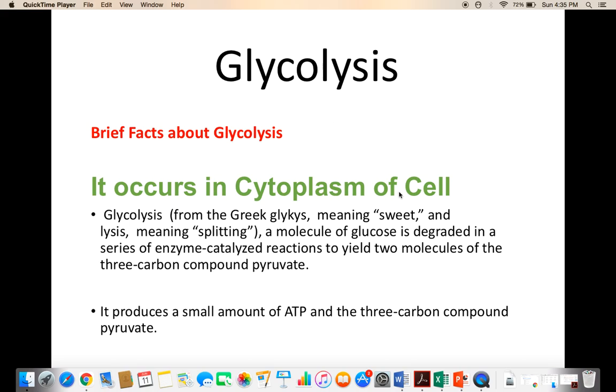Glycolysis cell के cytoplasm के अंदर होता है जहां पे glucose molecule breakdown होके pyruvate acid के दो molecule बनाता है। Glucose खुद six carbon compound होता है और जब ये breakdown होता है तो ये three carbon compound या pyruvate acid के दो molecule बनाता है।